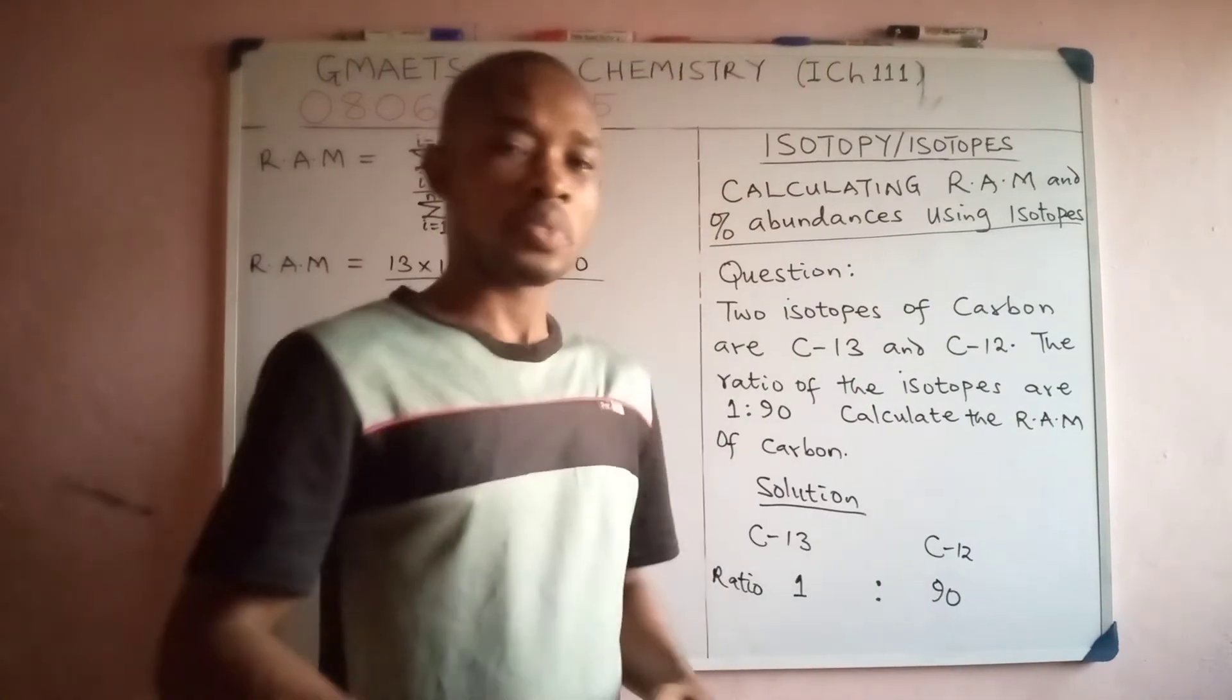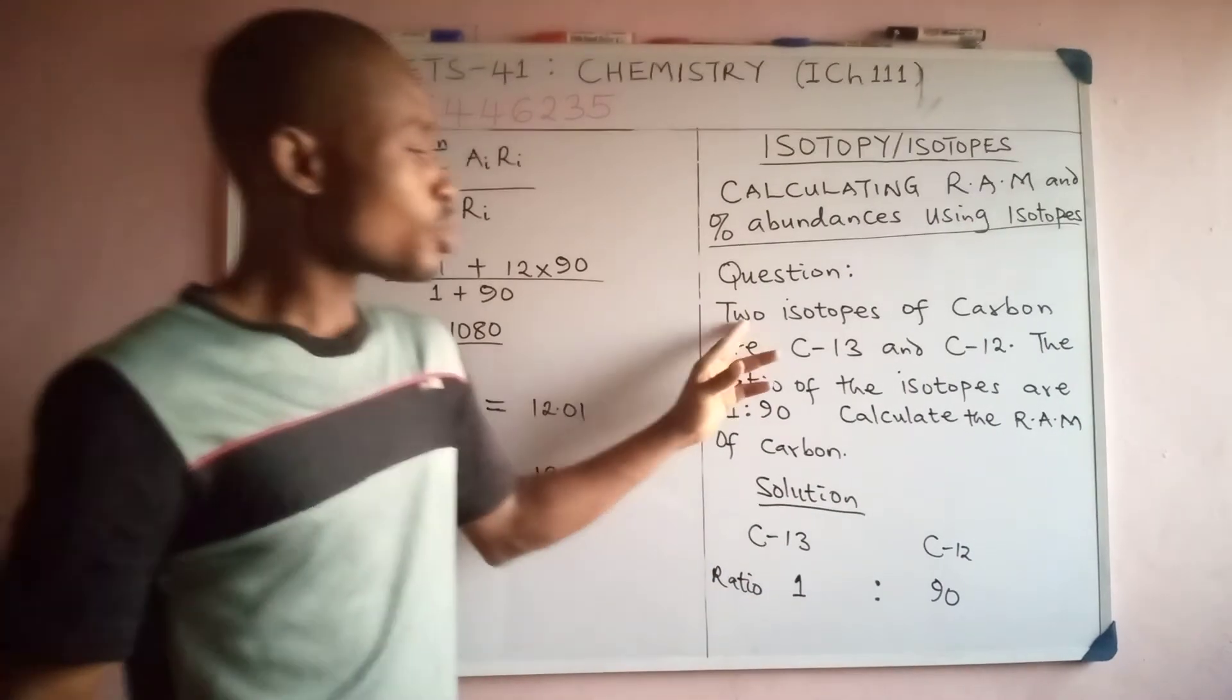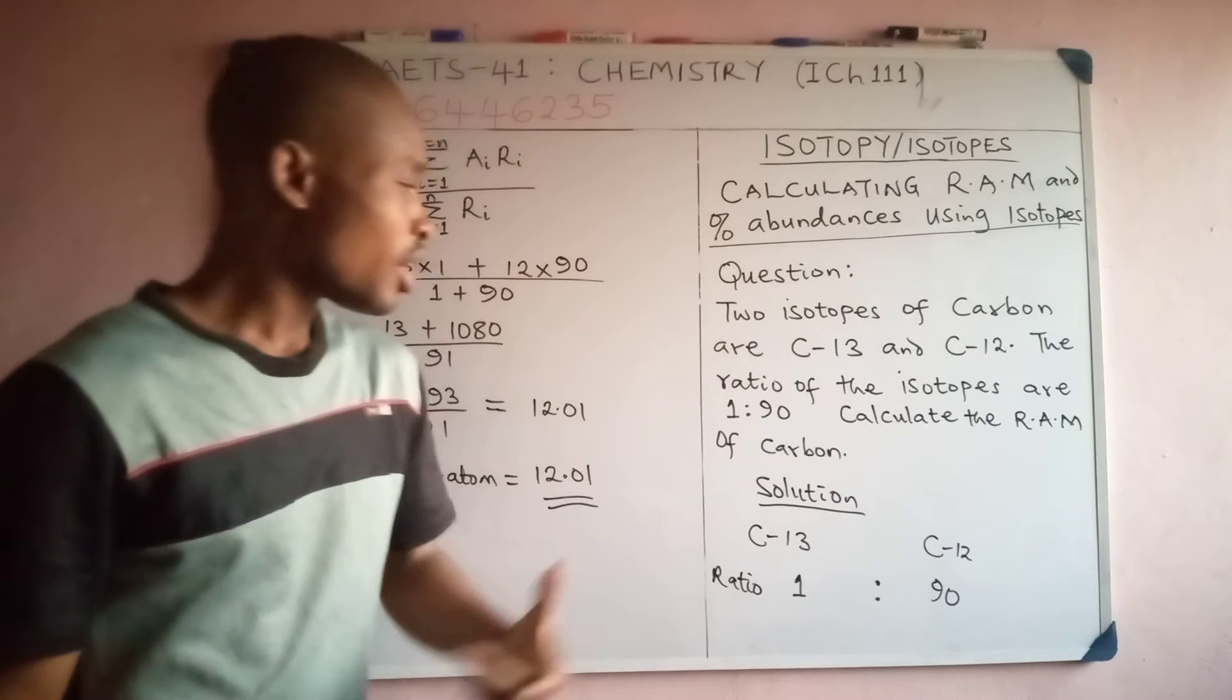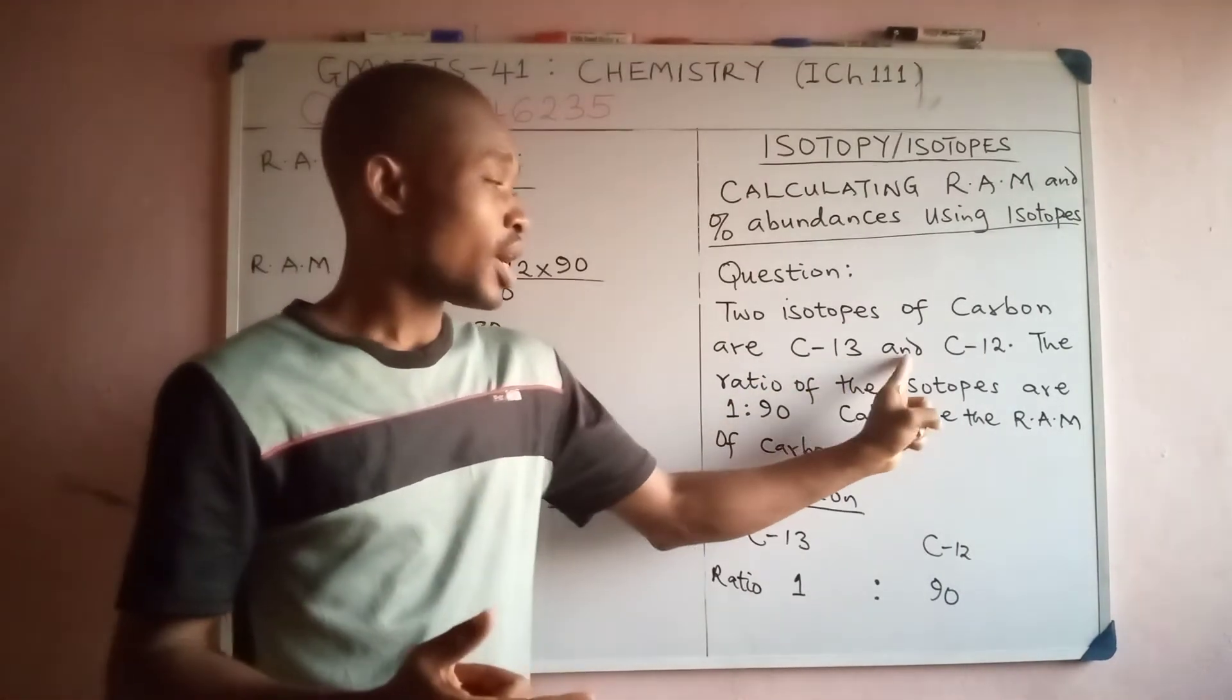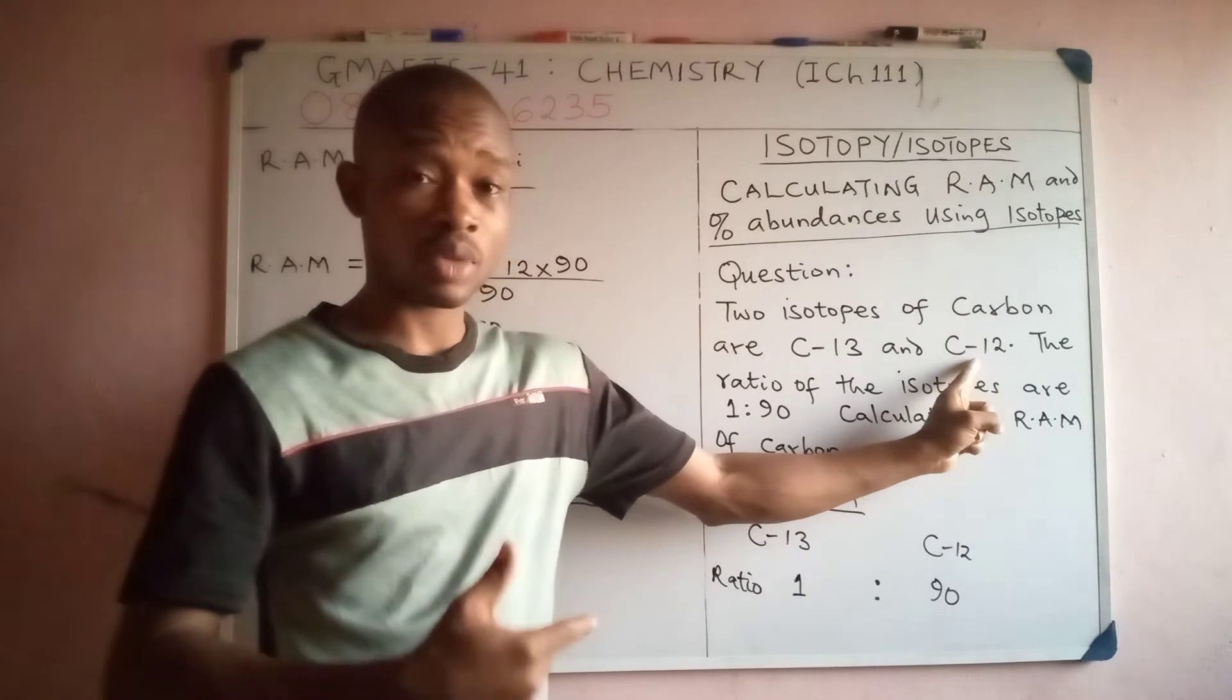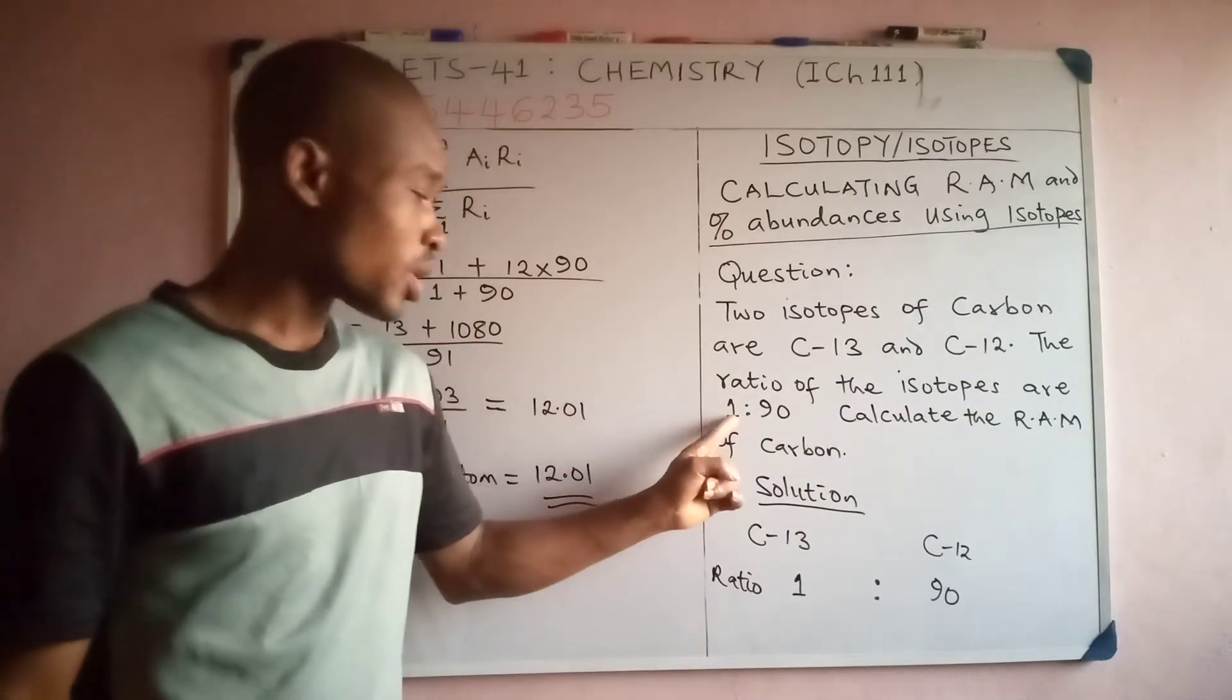Let's read the question together and see. Two isotopes of carbon are C-13, that is carbon-13, and C-12, that is carbon-12. The ratio of the isotopes are 1 ratio 90.